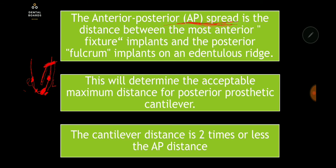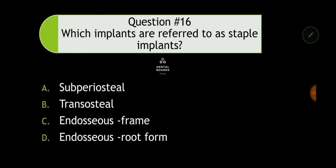A picture will be shown towards the end of this series. The AP spread determines the maximum acceptable distance of the posterior prosthesis cantilever, which is usually two times or less. On your exam, if you don't see two times, you may also see 1.5 times. Make sure you memorize this.